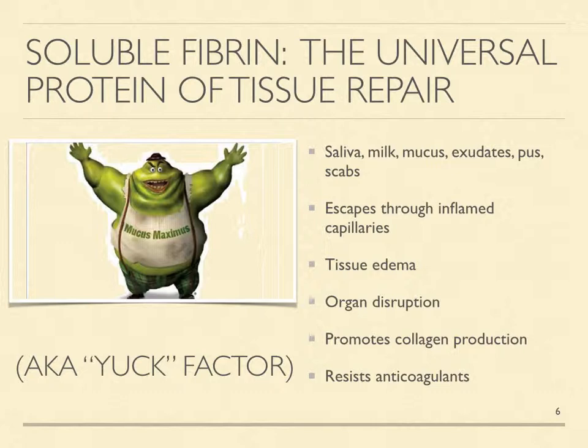Soluble fibrin becomes dangerous when it is produced in excessive quantities by MSM hyperactivity. It escapes from blood through inflamed capillary walls, invades tissues, and causes tissue edema and organ disruption. It floods the lungs with exudates that disrupt gas exchange in ARDS, pneumonia, asthma, and influenza.